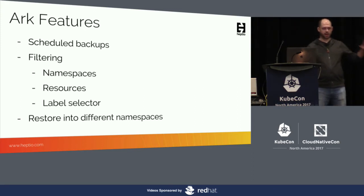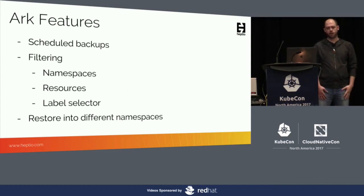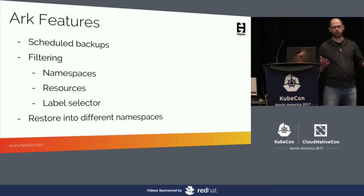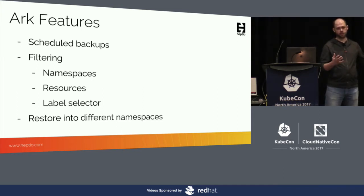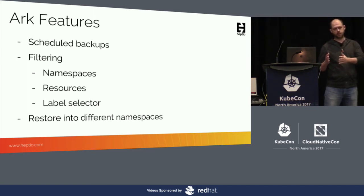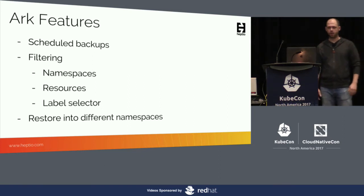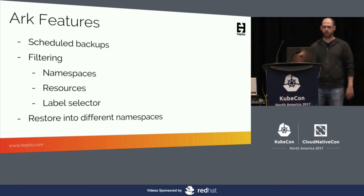We support complex filtering both when you take a backup and when you do a restore — you can filter based on the namespaces you want to back up, based on the resource types, and based on label selectors. Often users will take a backup of their entire cluster so that they have all of the information, and when they go to do a restore, they may do it on a namespace-by-namespace basis or only restore components that match a certain label selector.